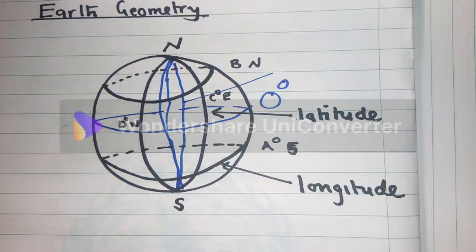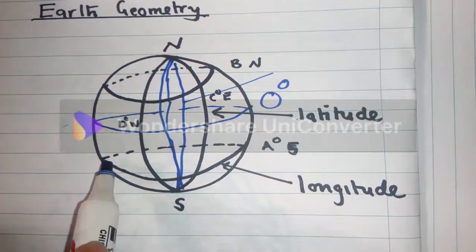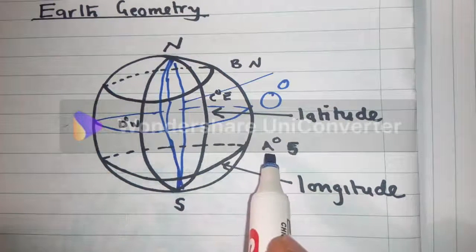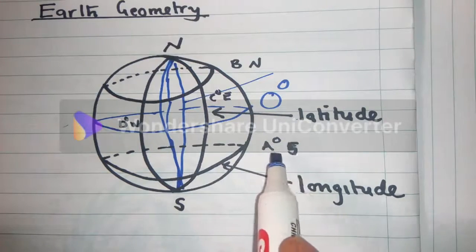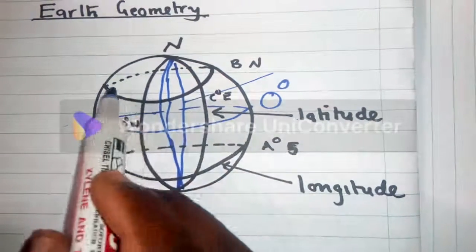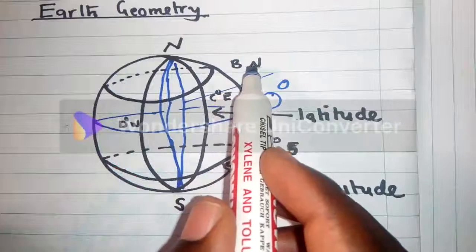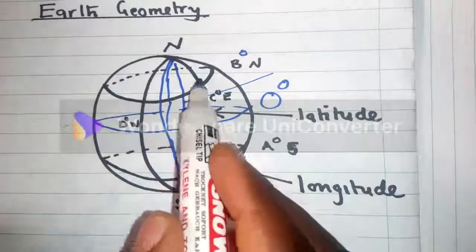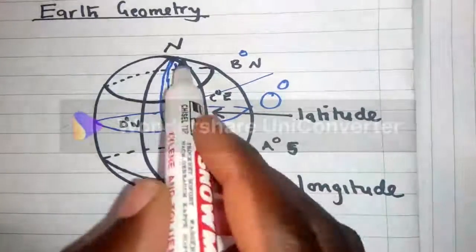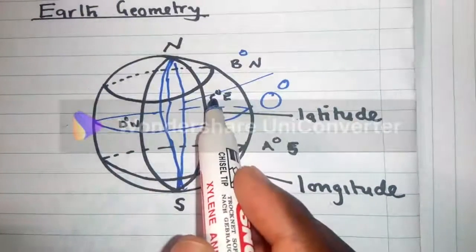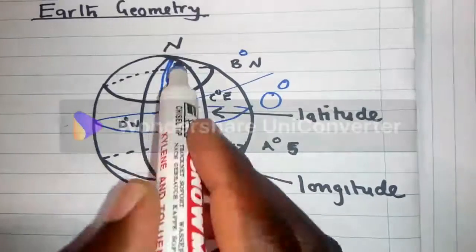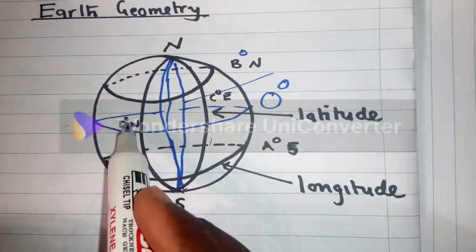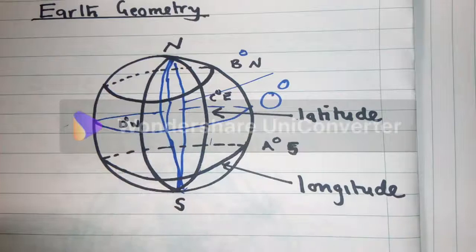Alright, so when you want to locate the position, for example, this line, we have been told that it's A degrees South. And this latitude is B degrees North. And over here, this latitude, I mean longitude, which is over here, it's C degrees East. While the other one over here is D degrees West.